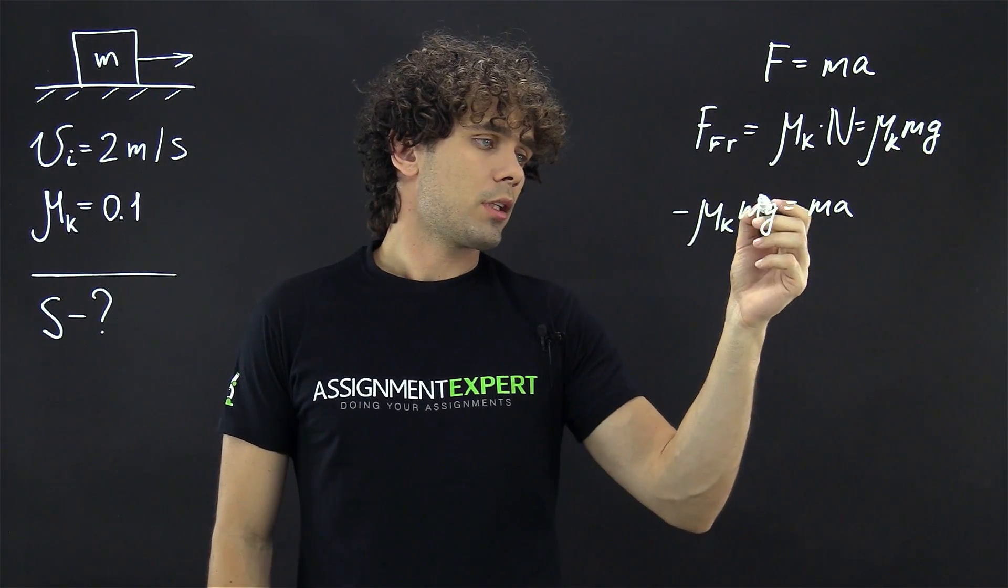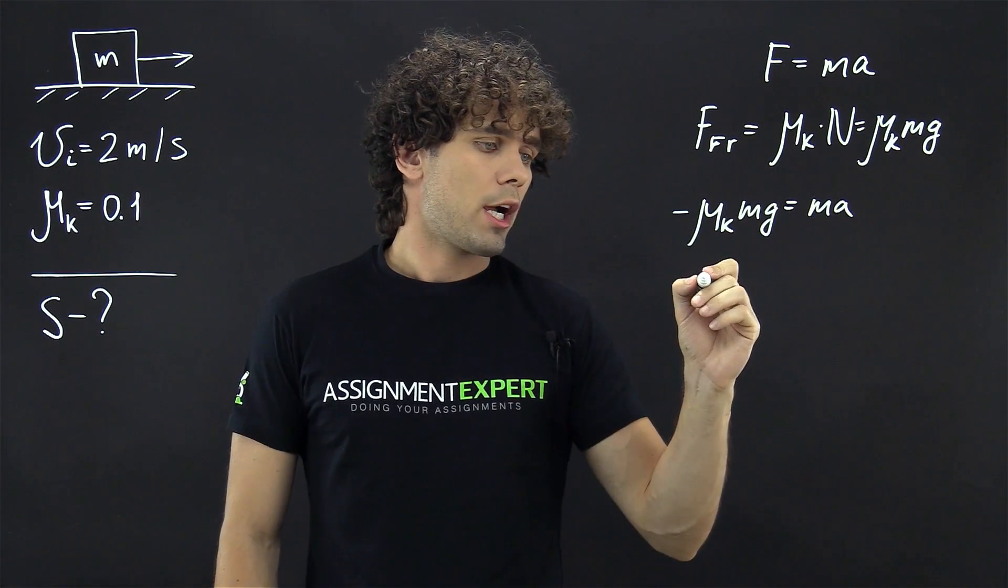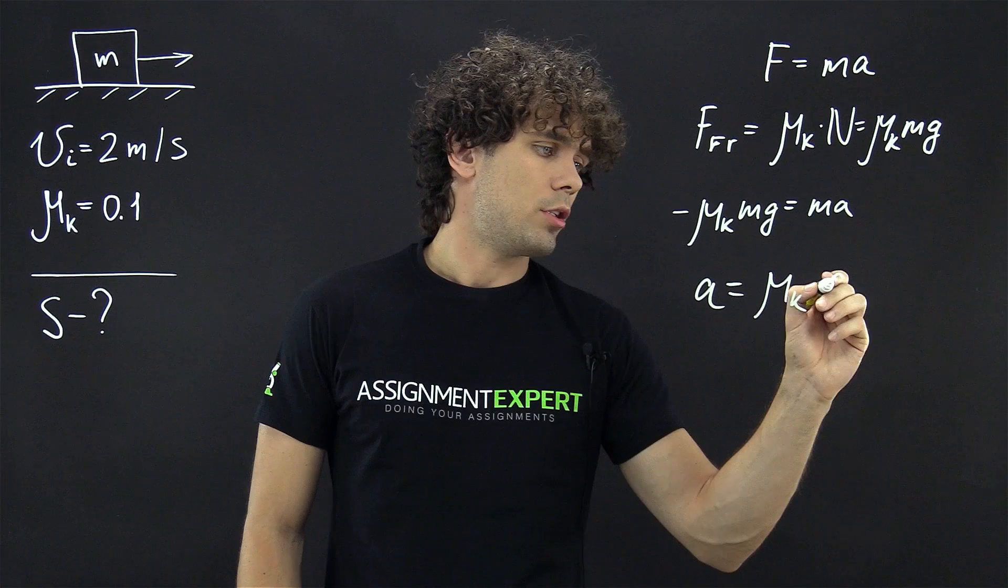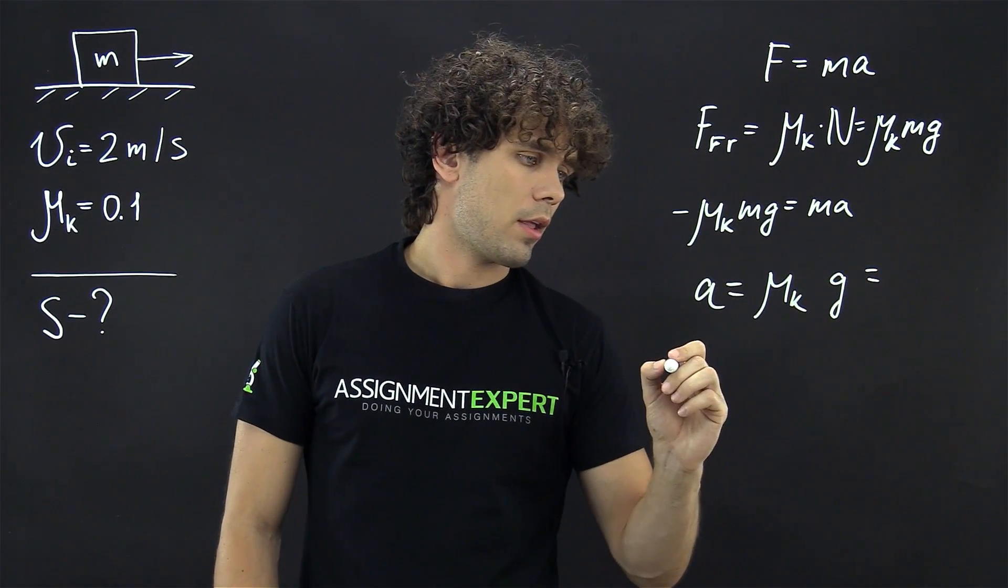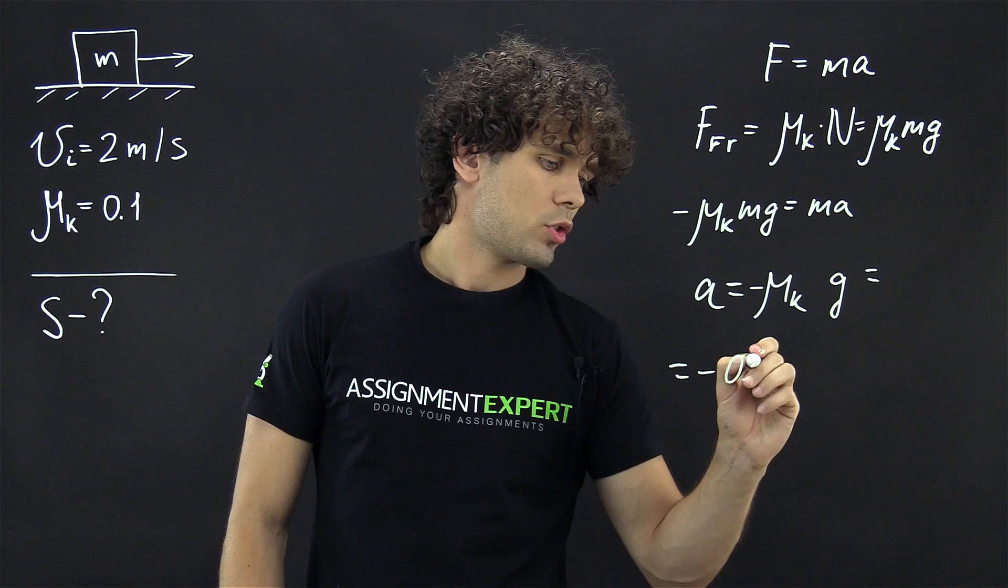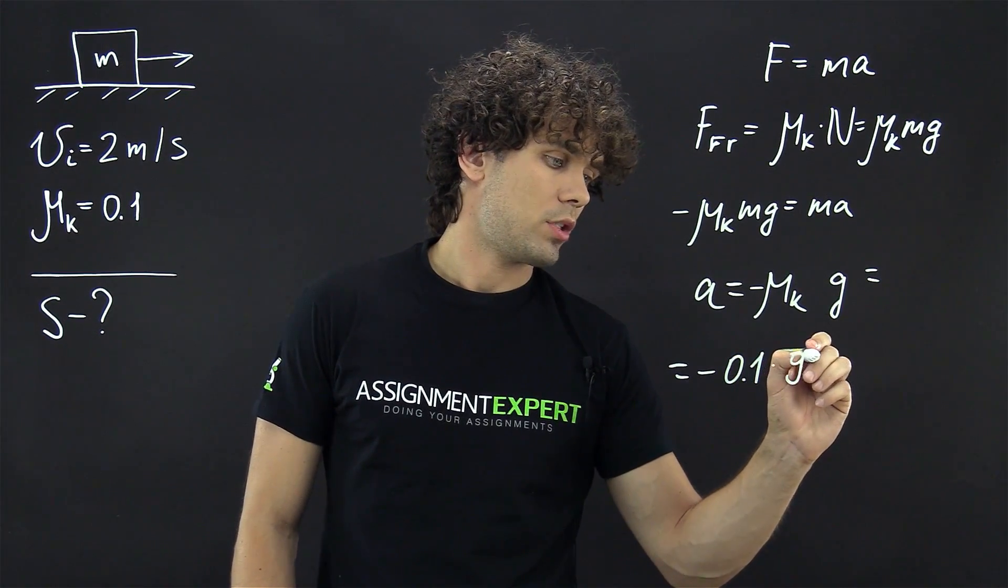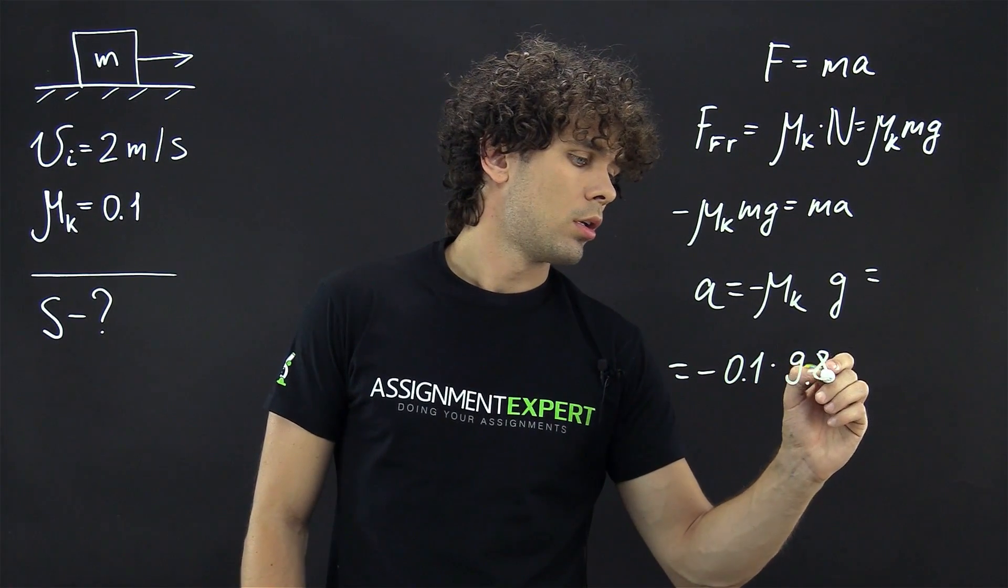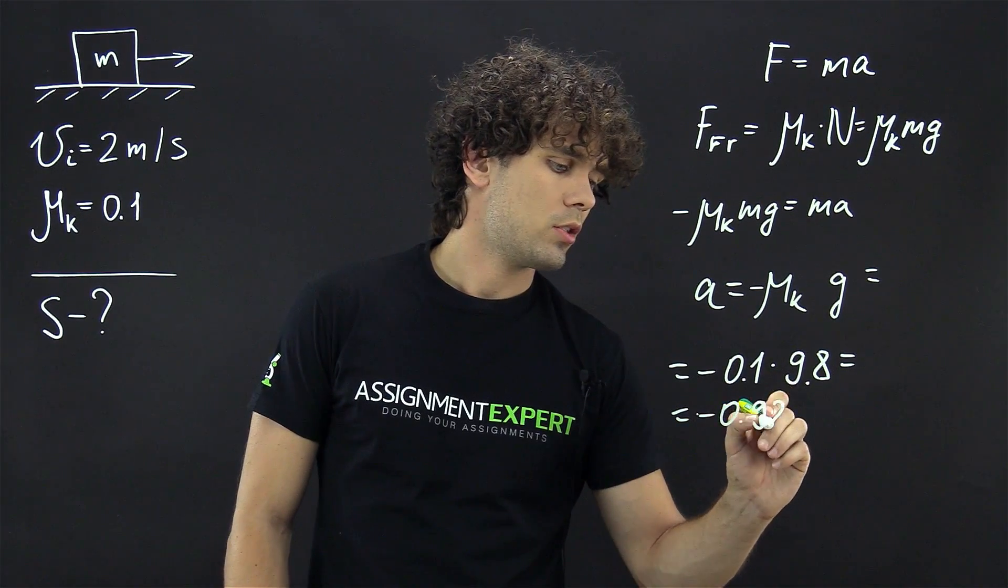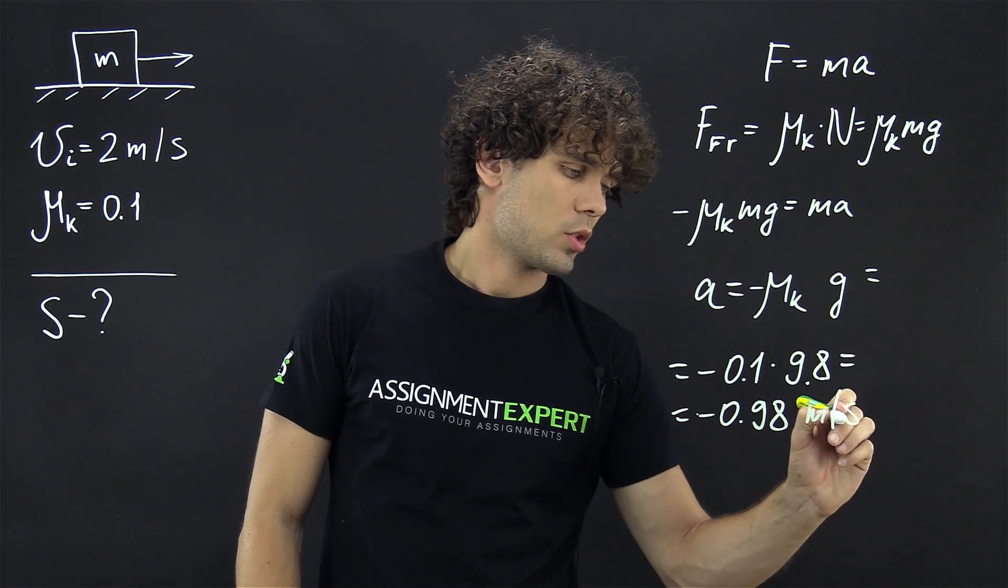So, from here we can cancel out M and derive A as negative mu k times g. And this is equal to negative 0.1 times 9.8 and gives us negative 0.98 meters per second squared.